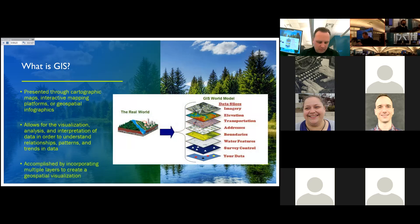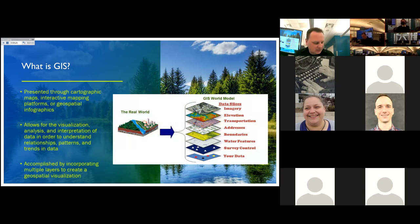GIS stands for geographic information systems, or in more recent trends is being referred to as geospatial information systems. This relates to a number of different technologies, software processes and methods that are used to visualize different types of data within a geospatial context. Generally, this information is presented through cartographic maps, interactive mapping platforms, or geospatial infographics. At its core, GIS allows for the visualization, analysis, and interpretation of data in order to understand relationships, patterns, and trends in data.